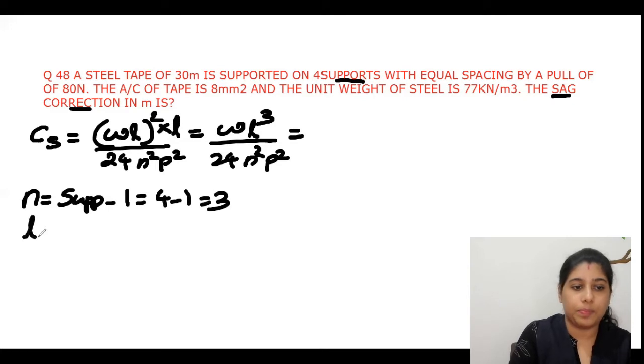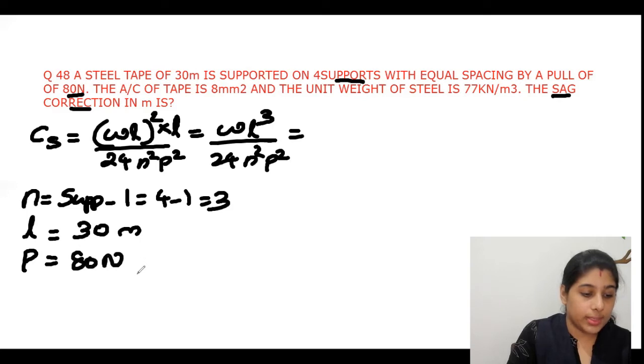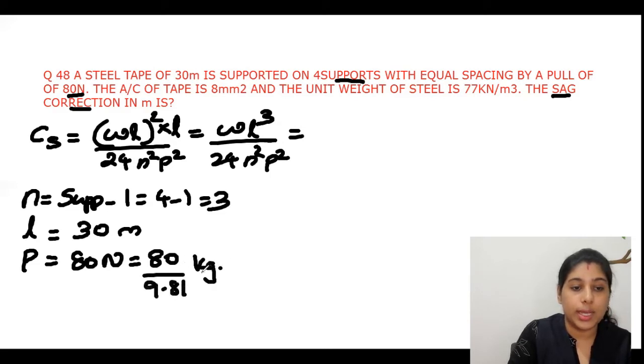L value is what? L value already given as it is, 30 meter. You can directly substitute it, 30 meter. Then P value, P is what given, the pull of 80 Newton. Actually 80 Newton. We want the answer in kilogram. Every time we should want P in kilogram, so we will divide this with 9.81. So we got the answer 80 divided by 9.81 kilogram.